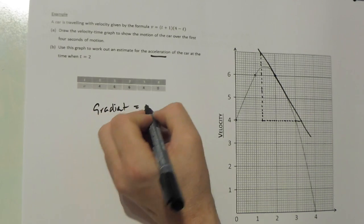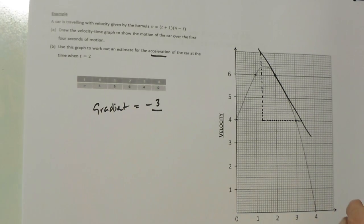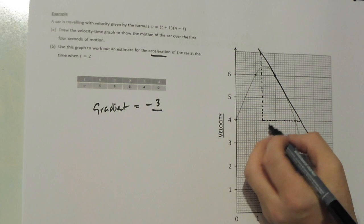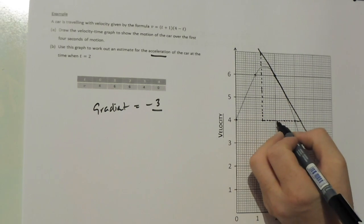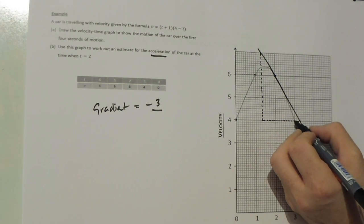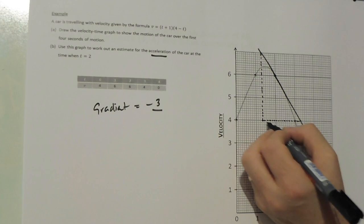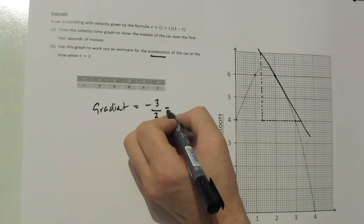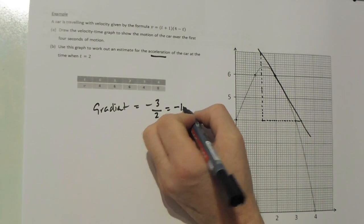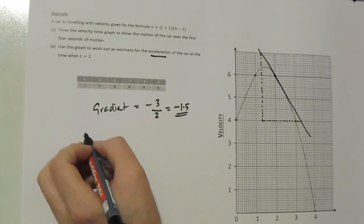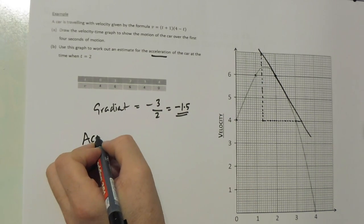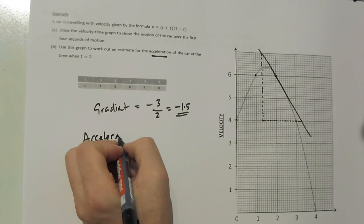The gradient is -3 divided by... going across I have gone 2 squares. So the gradient works out to be approximately -1.5, and that equates to the acceleration.